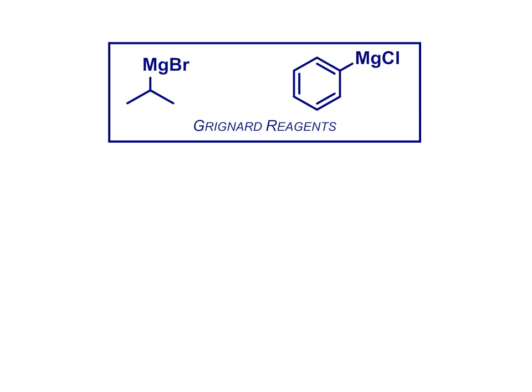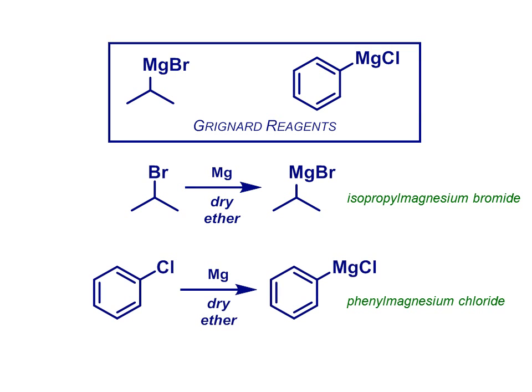A second important class of nucleophile, which commonly reacts with aldehydes and ketones, are Grignard reagents, named after the French chemist Victor Grignard, who first discovered them more than 100 years ago. These reagents are carbon-magnesium species and are made by combining an alkyl halide with magnesium metal in dry ether as the solvent.